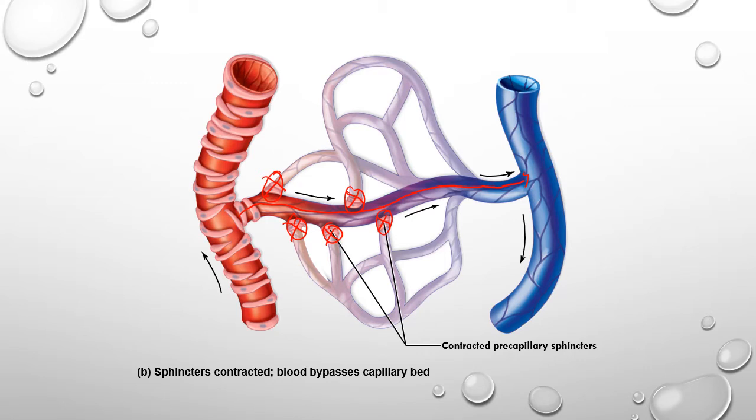You can see this process when someone goes from a parasympathetic state into a sympathetic state — you look at their skin and they become pale. That's because we've clamped down all of the capillary beds to the skin, reducing blood flow to it, so the skin starts to become pale and is no longer getting the same blood supply as before.